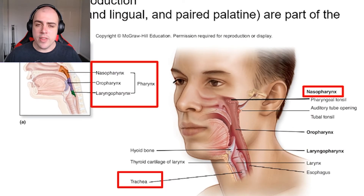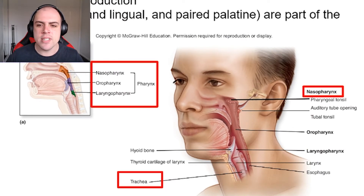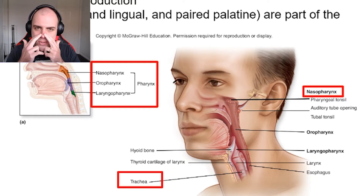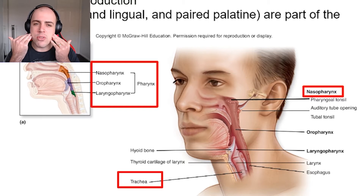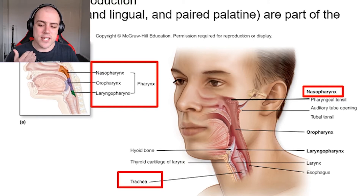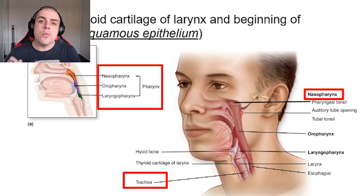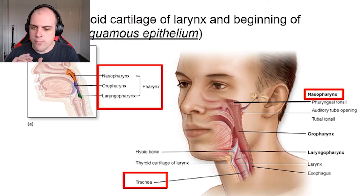Continuing on with our journey through the nose, we are now going to enter the pharynx. What the pharynx does is it essentially connects the nasal cavity and the back of your throat down to the esophagus. It's primarily broken down into three main sections: the nasopharynx, the oropharynx, and the laryngopharynx.